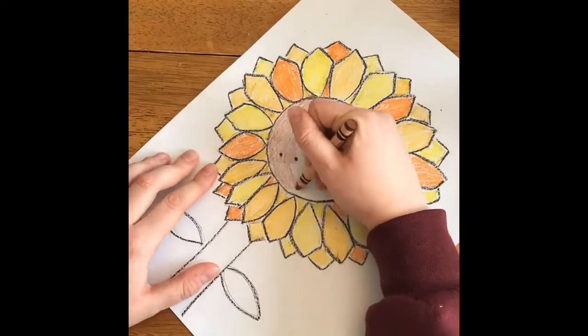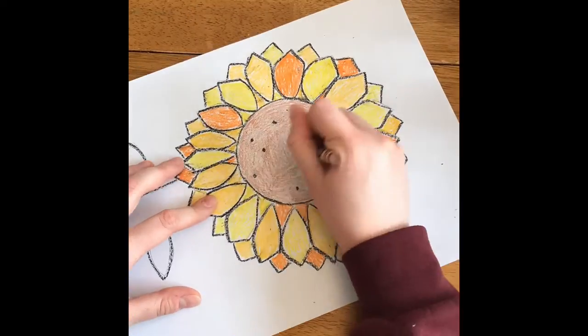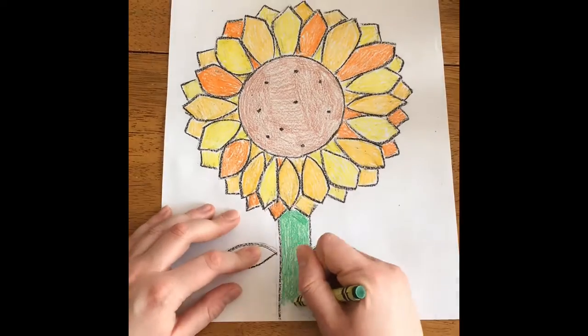And then once you're done coloring the petals, the center should be brown, and then the stem is green.